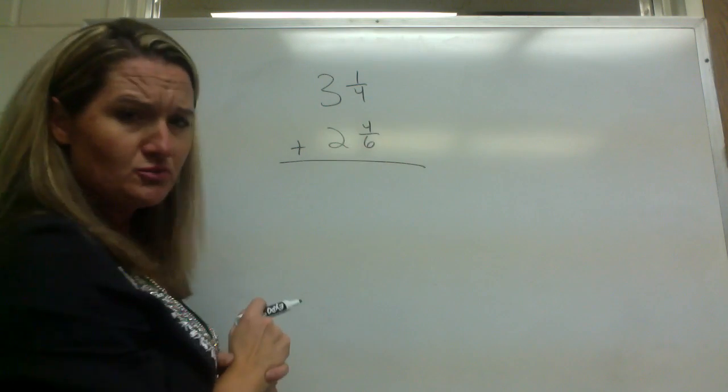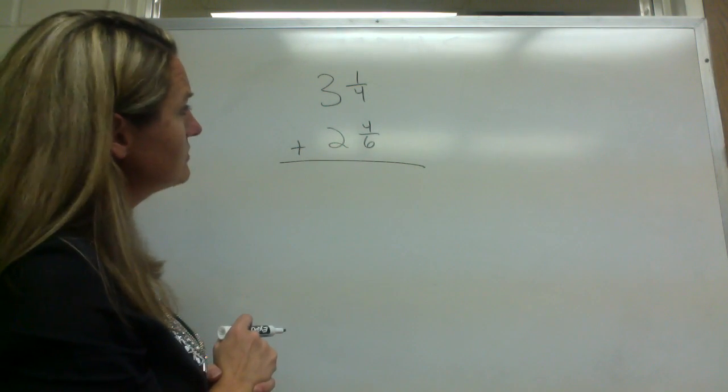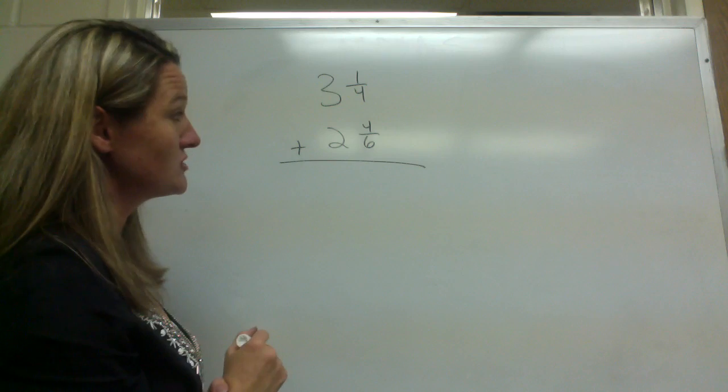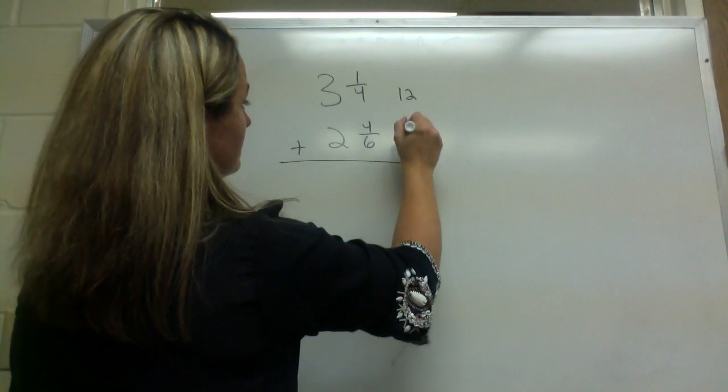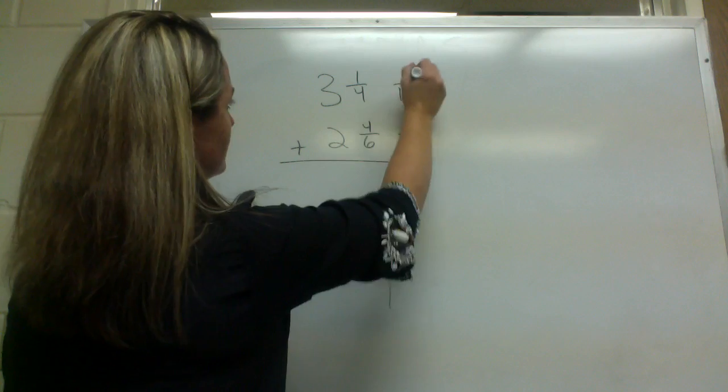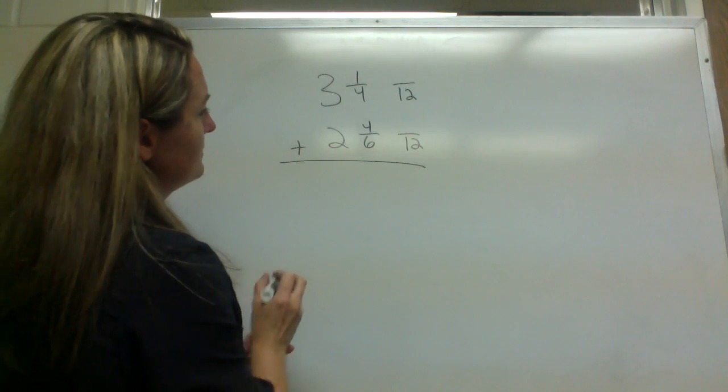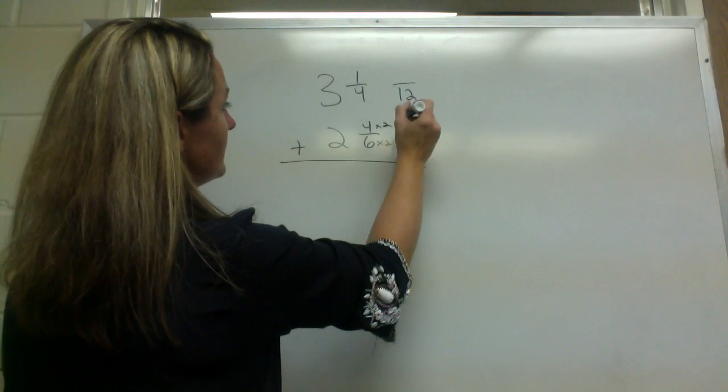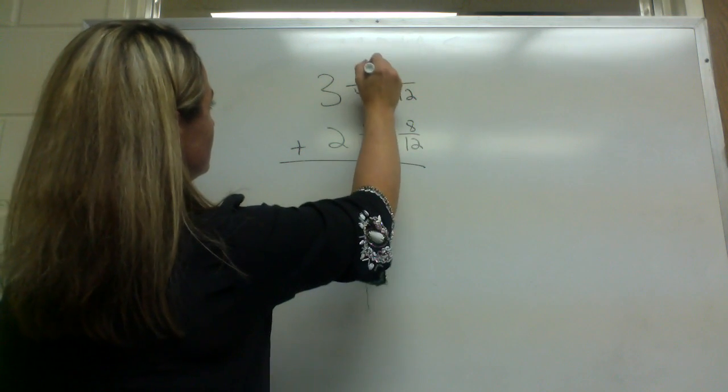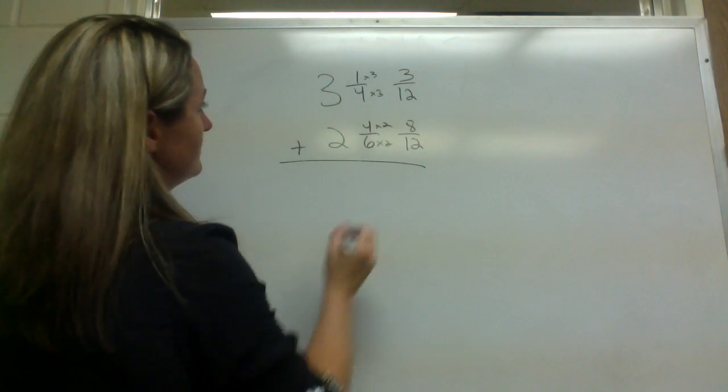So four and six, what number do both four and six go into? Or what is the smallest number that four and six go into? It'd be twelve, right? So twelve, twelve. Wasn't the last problem twelve too? Must be a popular number. All right, how many times does six go into four? Two, two, eight, three, three, three.